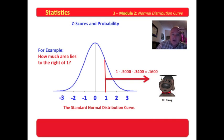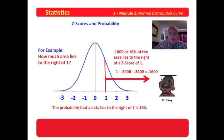How much area lies to the right of one? That'd be one minus 0.5, which is this area, minus 0.34, which is this area, which is 0.16. So 16 percent of the area lies one standard deviation or more above the mean. That's pretty cool, isn't it? The probability that a data lies to the right of one is 16 percent.